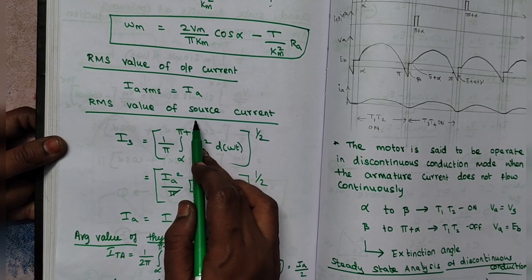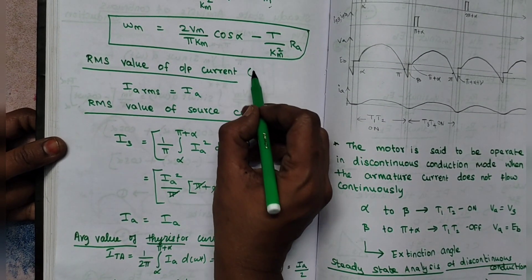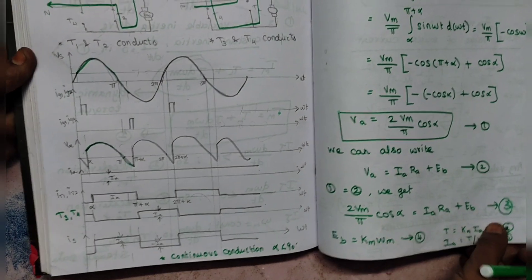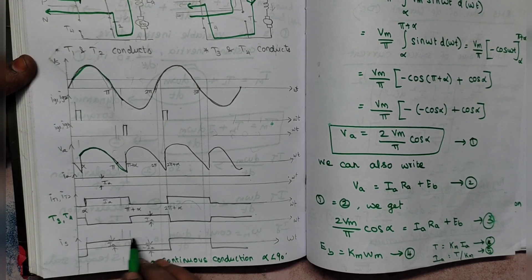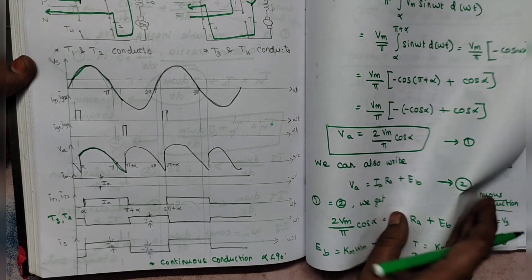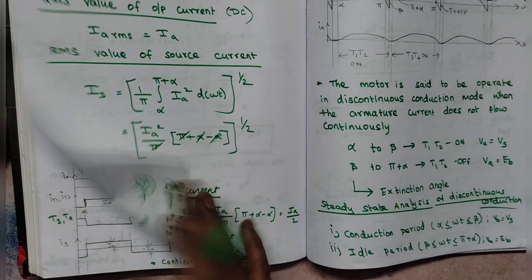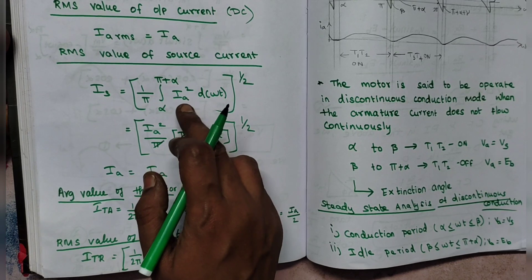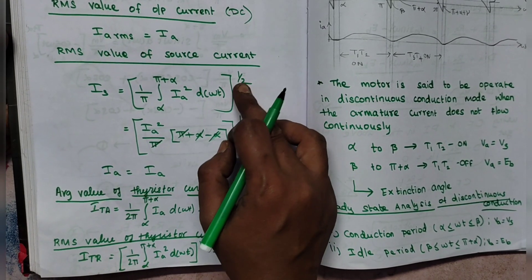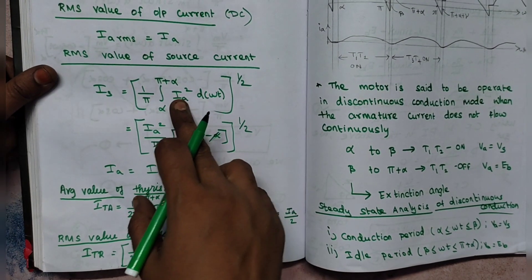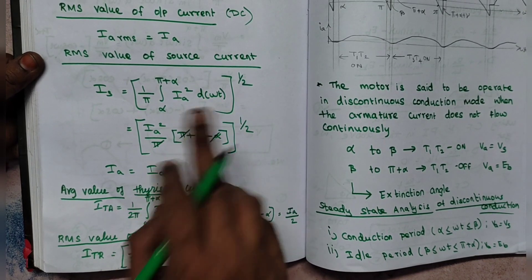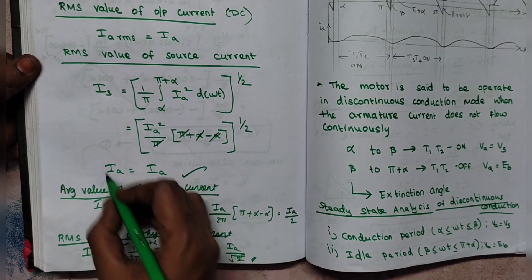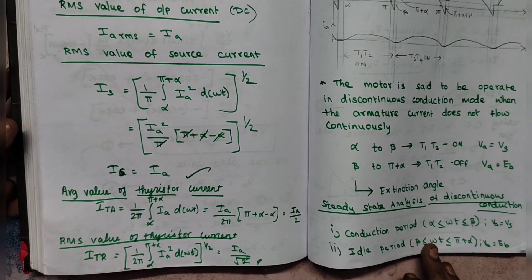For the RMS value of the source current: the source current is AC, alternating between positive and negative directions. We take (1/π) times the integral from α to π + α of Ia²·d(ωt), then take the square root. Since Ia² is constant we take it out; integrating d(ωt) gives (π + α − α) = π. After cancellation, the RMS value of the source current is Ia.